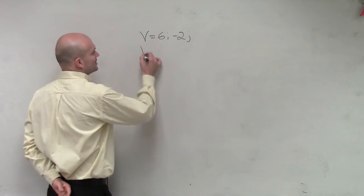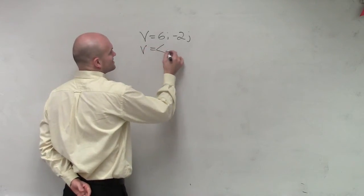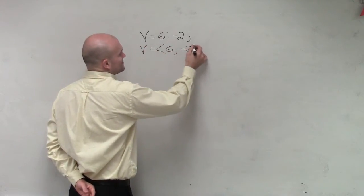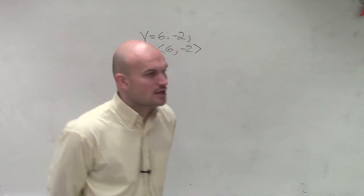Remember, this vector is the same thing as written as (6, negative 2). That's going to be our component form of our vector.